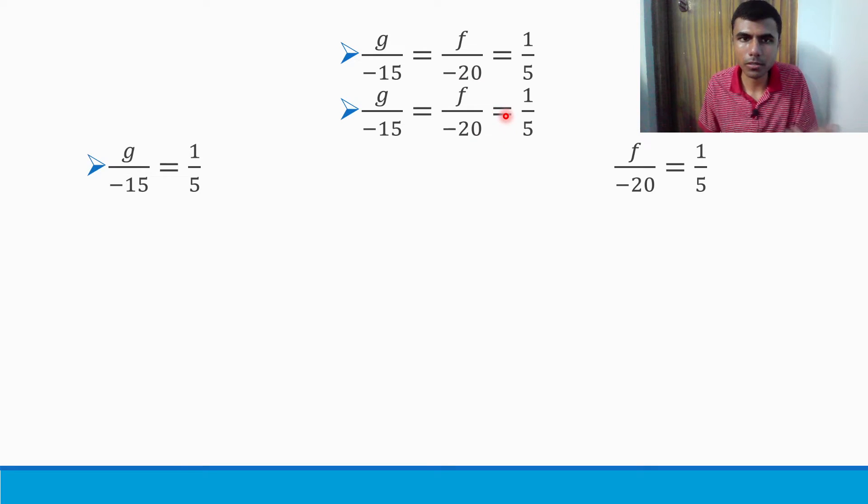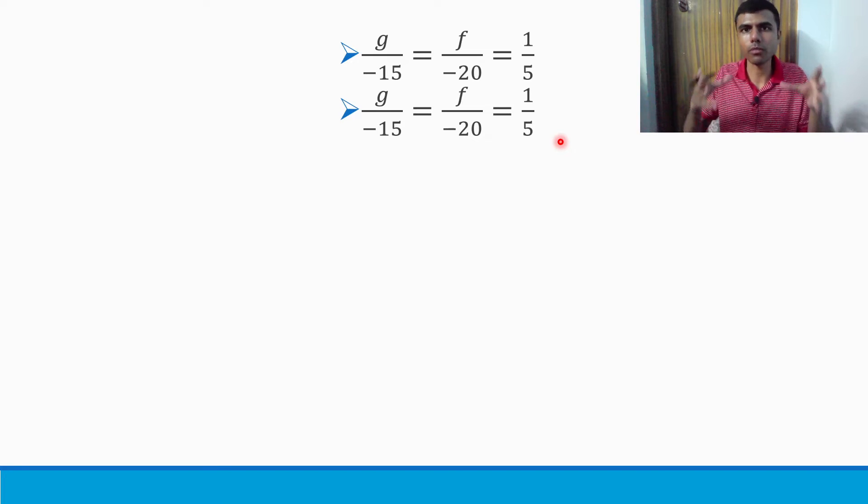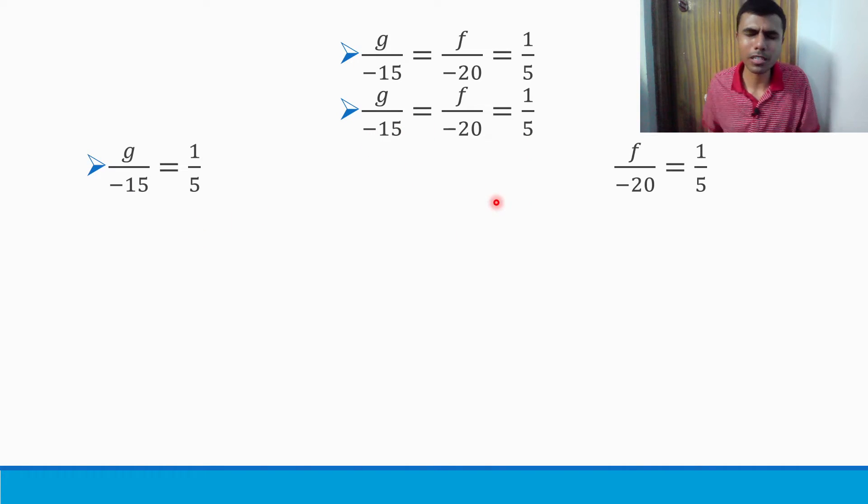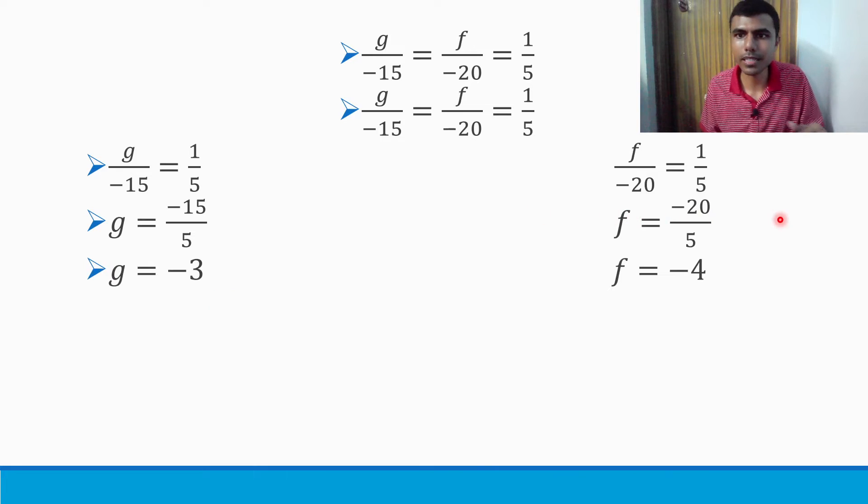Therefore g/(-15) = f/(-20) = 1/5. Since this is like a = b = c, I can take g/(-15) = 1/5 and f/(-20) = 1/5. So g = -15/5 = -3 and f = -20/5 = -4. We got g and f.